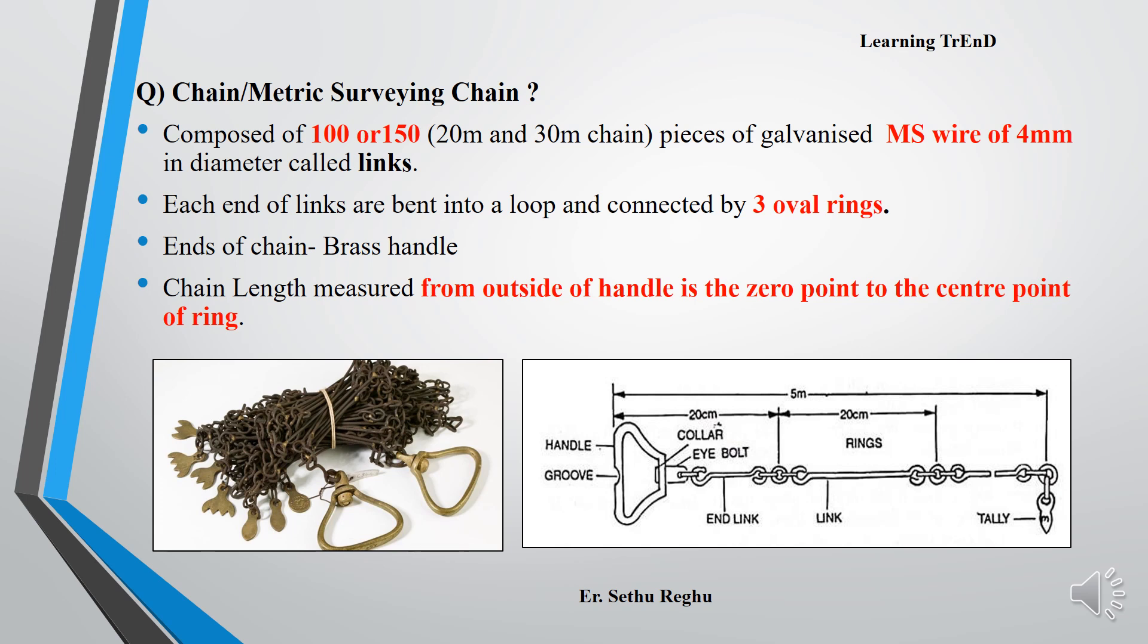A metric surveying chain is used where metric units are used to measure distance. One metric survey chain comes in 20 meter and 30 meter types. The 20 meter type has 100 links and the 30 meter type has 150 links. Each link is made of galvanized mild steel wire with 4 mm diameter. Each end of the links are bent into a loop and connected by 3 oval rings. Chain length is measured from outside of the handle, which is the zero point, to the center point of the ring. The first end link measures 20 centimeters.